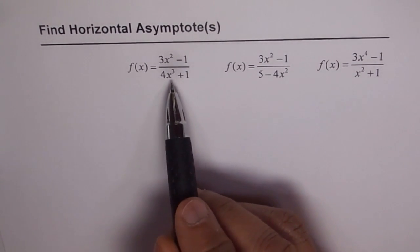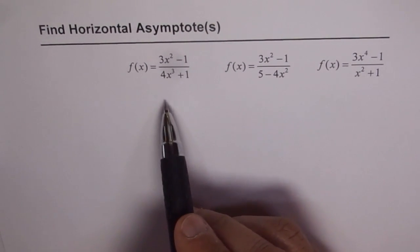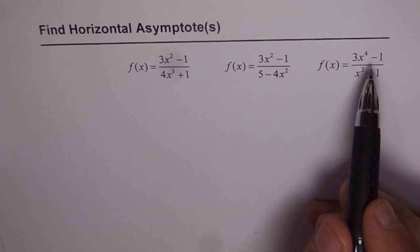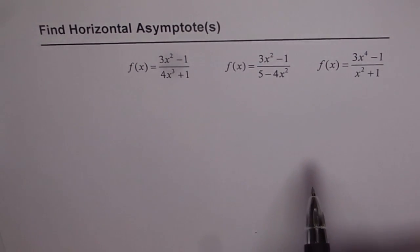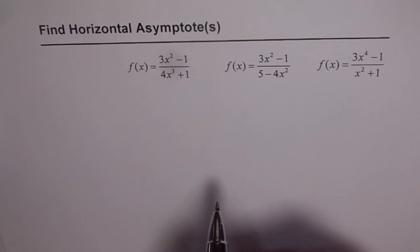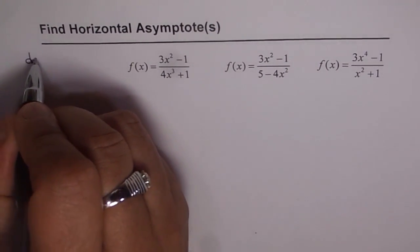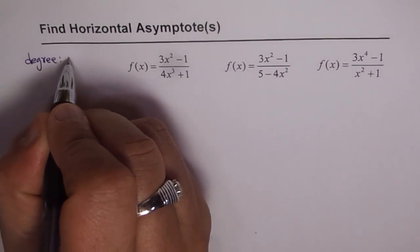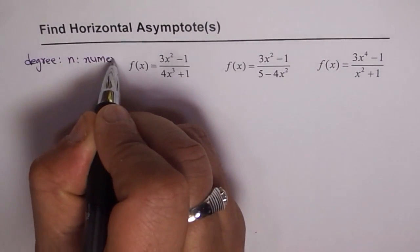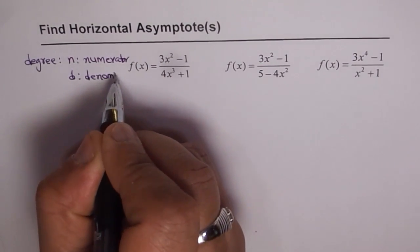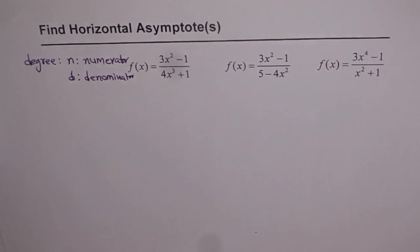As you can see, the degree of the denominator is one higher than the numerator in the first case. In the second case, the degree is the same for both numerator and denominator. And in the third case, the degree of the numerator is higher than that of the denominator. This is important when finding horizontal asymptotes. Let us say the degree is n for numerator and d for denominator.